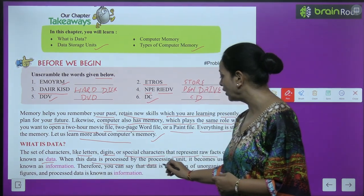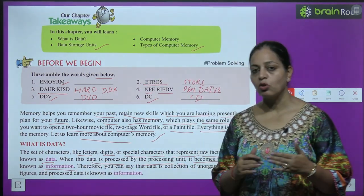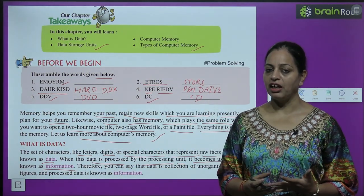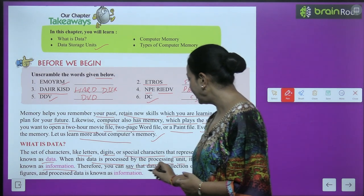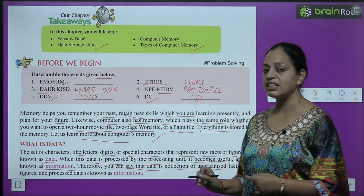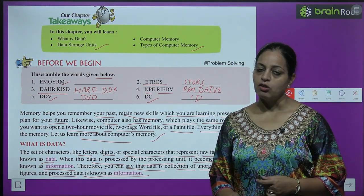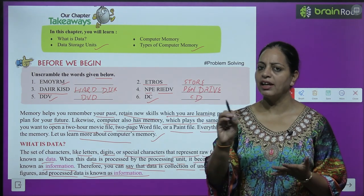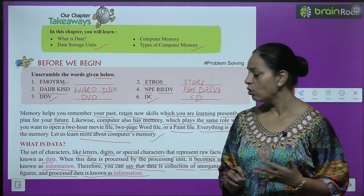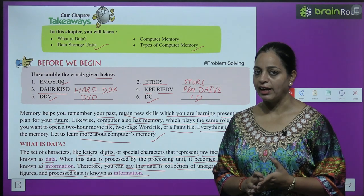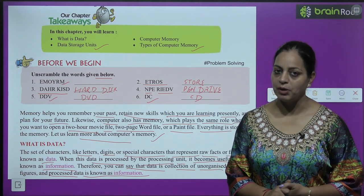When this data is processed by the processing unit, it becomes useful and is known as information. Data is a collection of unorganized facts and figures, and processed data is known as information. When we arrange randomly collected data in a systematic order, it becomes information.